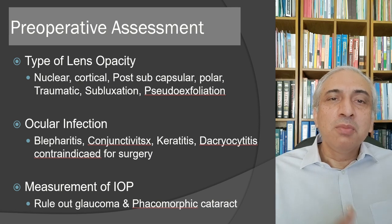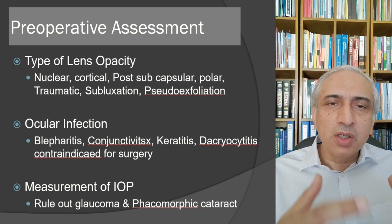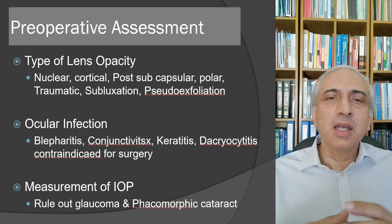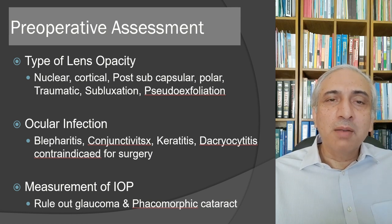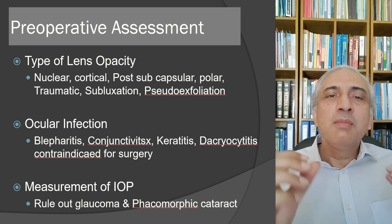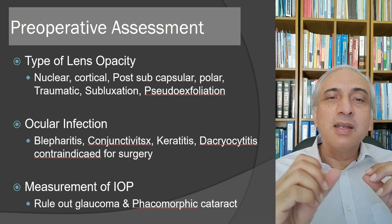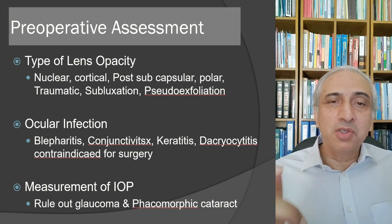The type of lens opacity is very important — nuclear, cortical, traumatic, subluxated, or pseudoexfoliation with subluxation may require special equipment like a capsular tension ring to complete surgery adequately. A posterior polar cataract means you should be prepared for a posterior capsular rent at the end of surgery.